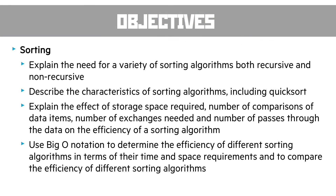The next objective in this unit is sorting. We need to explain the need for a variety of sorting algorithms — both recursive and non-recursive — and describe the characteristics of sorting algorithms including quicksort. We need to explain the effect of storage space requirements, number of comparisons, number of exchanges, and number of passes through the data on efficiency. Finally, we use Big O to determine the efficiency of different sorting algorithms in terms of time and space requirements.